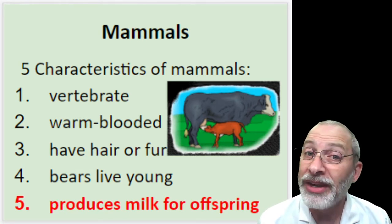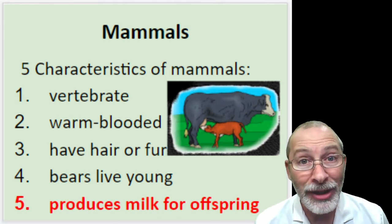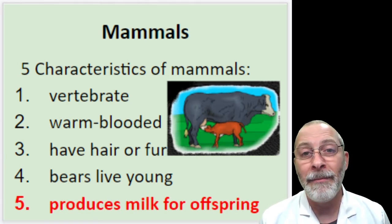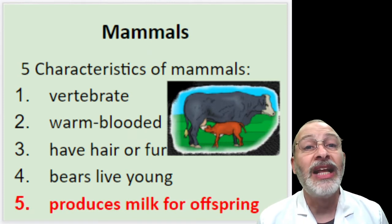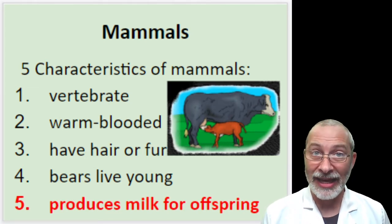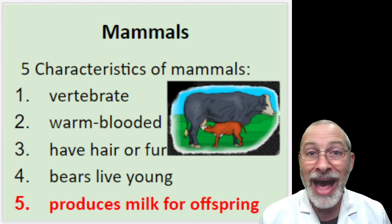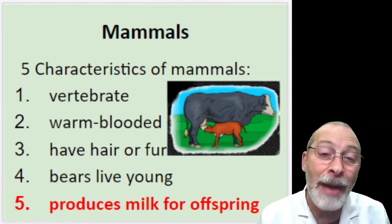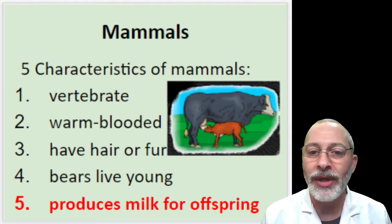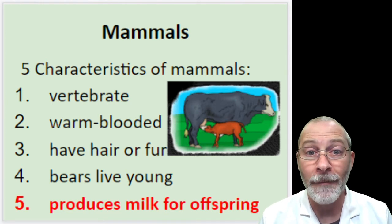The fifth characteristic is that mammals produce milk for their offspring. An interesting tidbit: the word 'mammal' itself comes from this characteristic. The female of each species has glands called mammary glands, and it is the mammary glands that produce milk. That's where the word 'mammal' comes from — our mothers have mammary glands that produced milk to feed us when we were young.